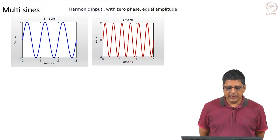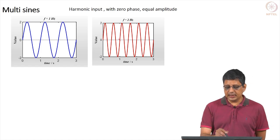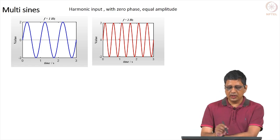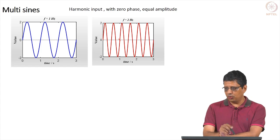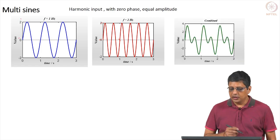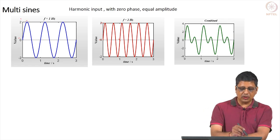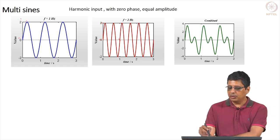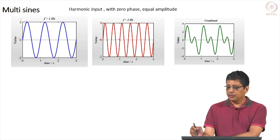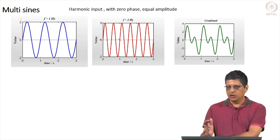First we will take a simple case with two sine waves: one at 1 Hz, another at 2 Hz. Two hertz means you have 2 sine waves in 1 second; in 3 seconds you have 6 sine waves. In 3 seconds, you have 3 sine waves of the 1 Hz wave. Starting phase is 0 for both, and they have equal amplitude going from 0 to 2. If you add them together, it does not go from 0 to 4 because the maxima occur at different times, and the combined wave has a period of 1 second.